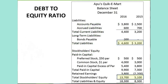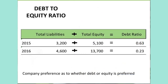Here is the liability and equity section of the balance sheet. We'll use the total liabilities and total stockholders' equity to determine the debt to equity ratio. For 2015, total liabilities divided by total equity gives us a debt to equity ratio of 0.63. For 2016, total liabilities divided by total equity gives us a debt to equity ratio of 0.23.